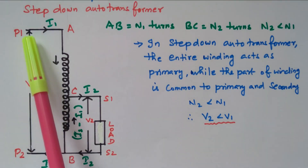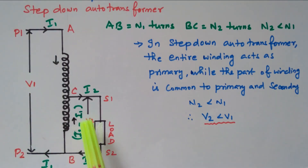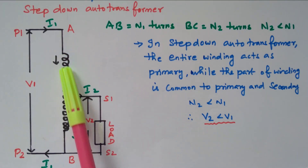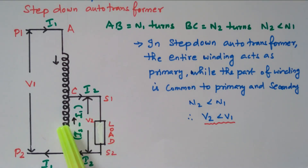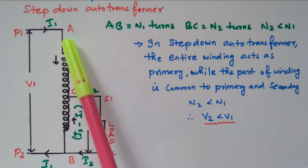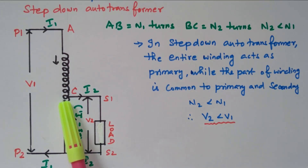Now consider the current direction. The current flowing through the primary winding is I1. I2 is the current flowing through the secondary winding with the load connected. In the portion AC, only I1 is flowing. In the common portion between primary and secondary, both I1 and I2 are present. Therefore the difference in current, I2 minus I1, flows through the section BC.